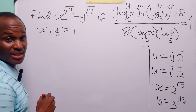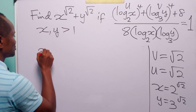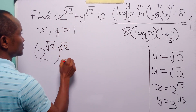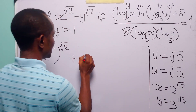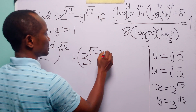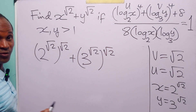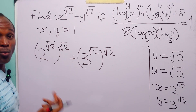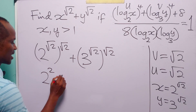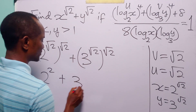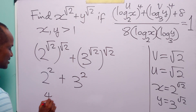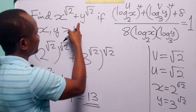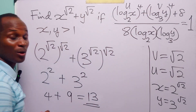Finally, to evaluate x squared plus y squared, we have 2 to the power root 2, all to the power root 2, plus 3 to the power root 2, all to the power root 2. When we have two powers like this, we multiply the exponents. Root 2 times root 2 equals 2. So we have 2 squared plus 3 squared, which is 4 plus 9, giving us 13.